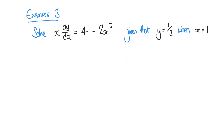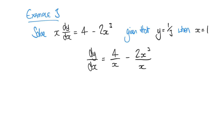Let's have a look at one more example. Here we have x dy/dx equals 4 minus 2x cubed, and we're told that when x equals 1, y equals 1/3. We'll rearrange so that dy/dx is by itself on the left hand side. Dividing both sides by x gives dy/dx equals 4/x minus 2x³/x, and we can simplify that since 2x³/x is just 2x², leaving dy/dx equals 4/x minus 2x².